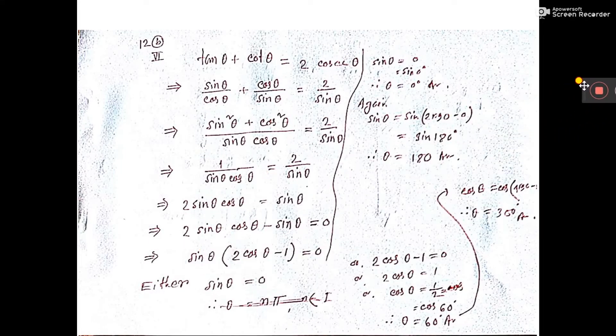This sum, see how I have done. Tan theta means sin theta by cos theta, and cot theta means cos theta by sin theta. Cosec theta means 1 by sin theta.